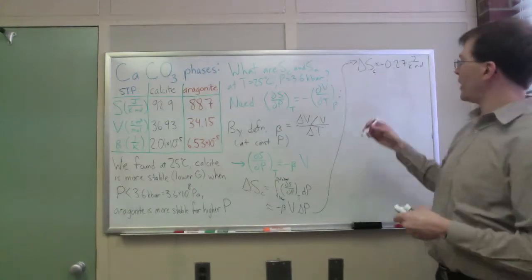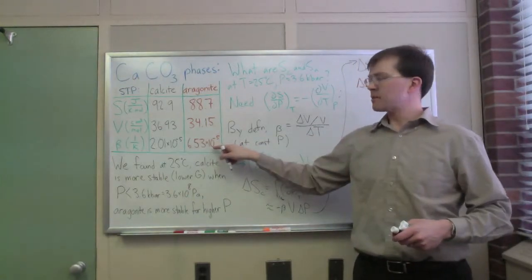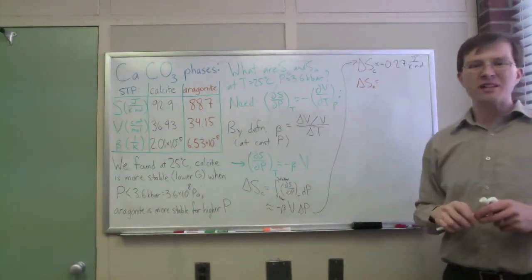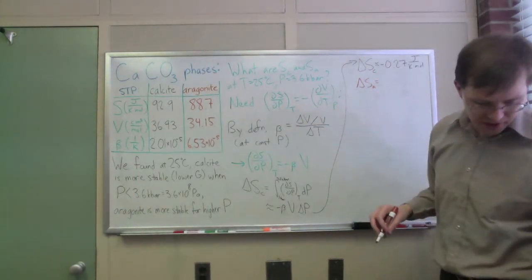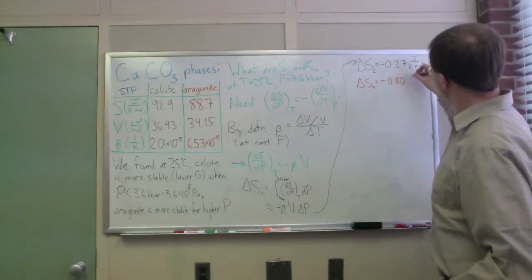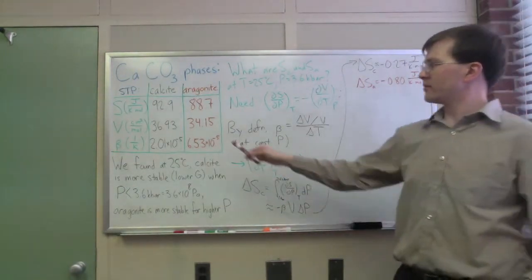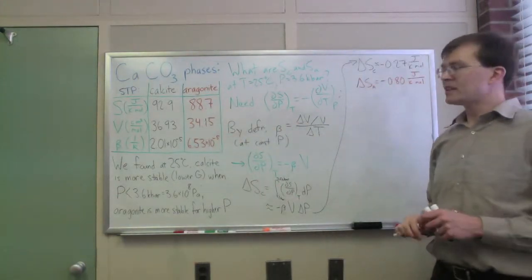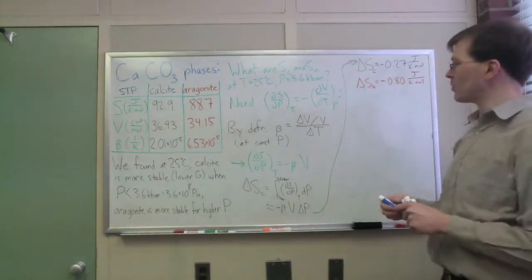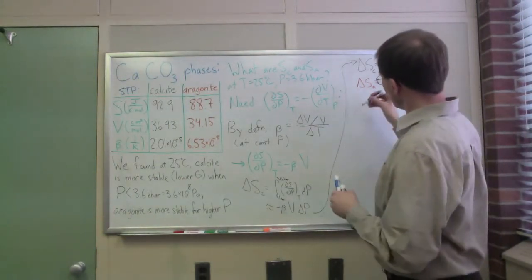It's going to be a larger change because its beta is about three times as big, so I expect about three times as much. V is pretty similar, so I expect about three times, and indeed when I plug everything in for this I get negative 0.80 joules per Kelvin per mole. Those are pretty small changes on the scale of 92 or 88, but it turns out we're subtracting, we're looking at differences, so this actually becomes more complicated.